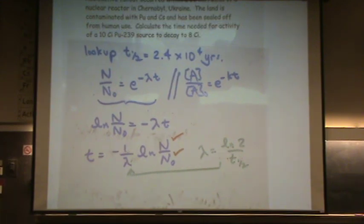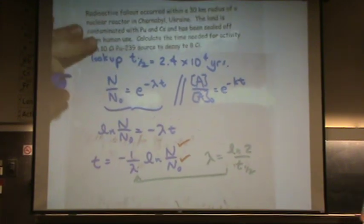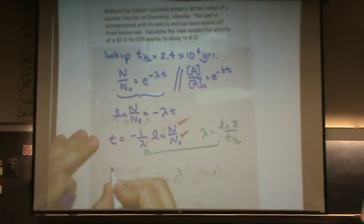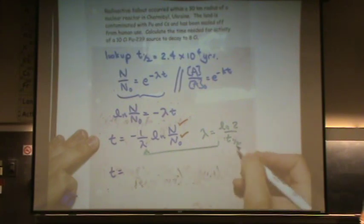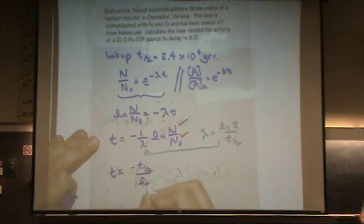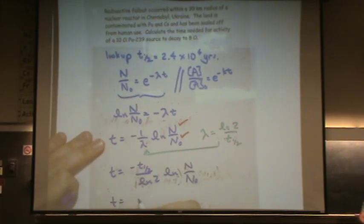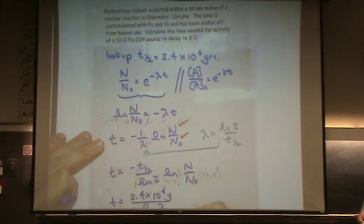So we're going to have t equals, I have to reciprocate lambda here, minus t one half over natural log of 2 times the natural log of N over N naught. Now let's plug in all our variables. t equals the half-life. That's what we looked up earlier. 2.4 times 10 to the 4 years over the natural log of 2 times the natural log of 8 over 10.